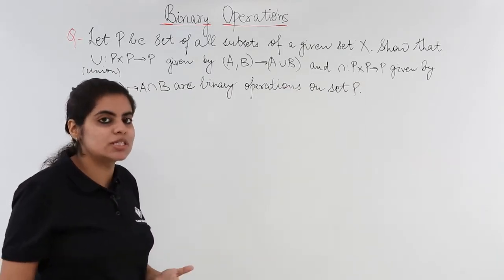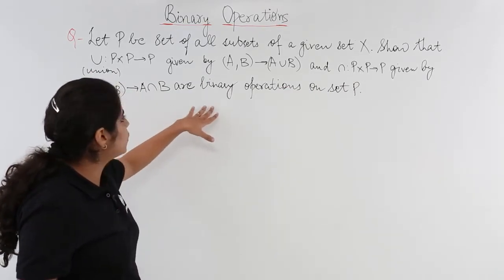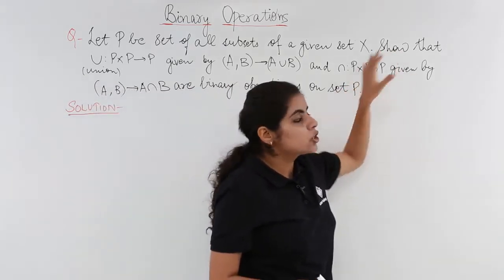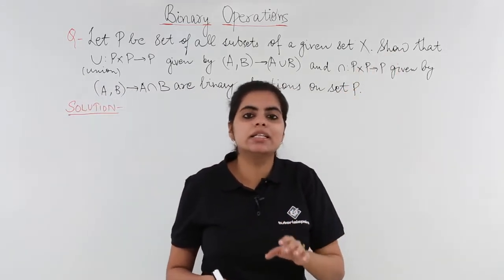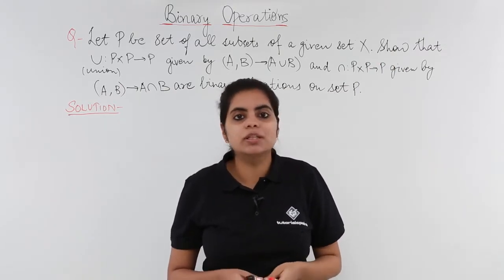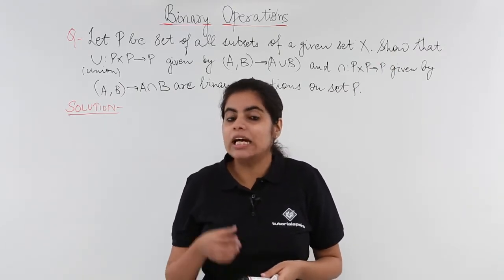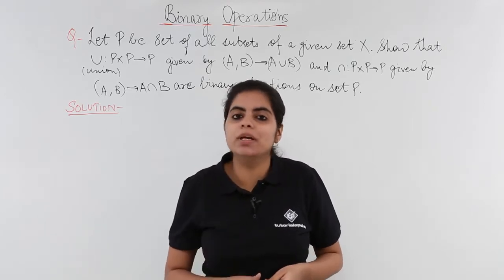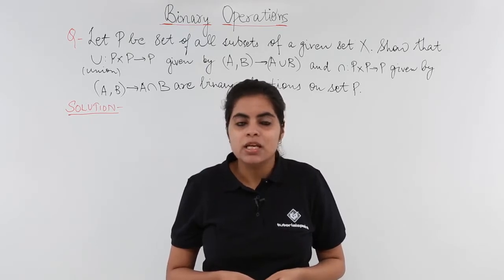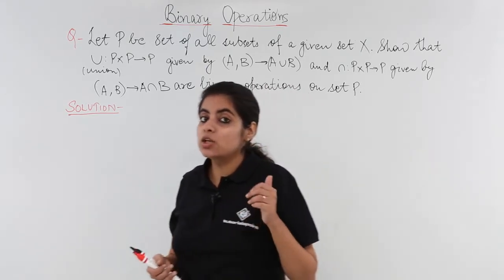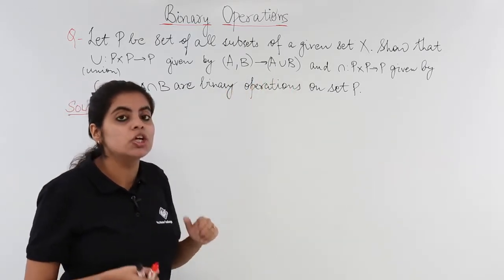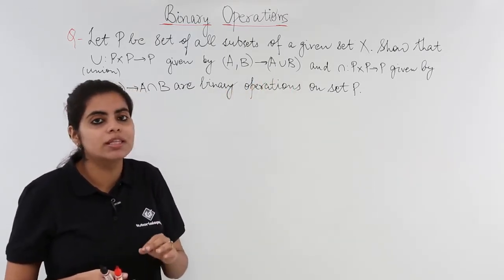What the question asks is that we have to prove these are binary operations. It is written show that union and intersection operations are binary operations. We understood in the previous video that any operation is said to be a binary operation when closure property is followed. So these operations, union and intersection, should be closed on the set.